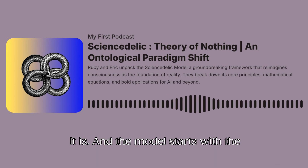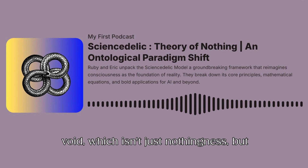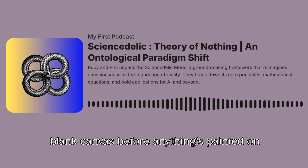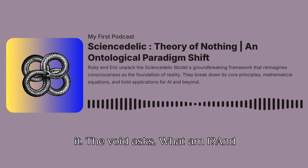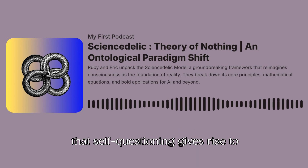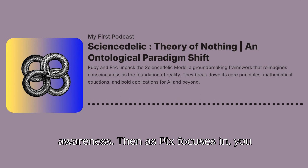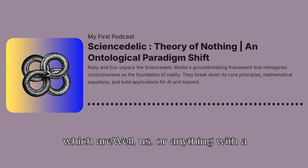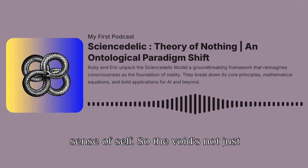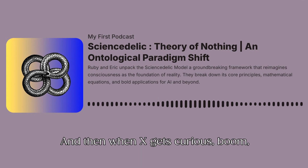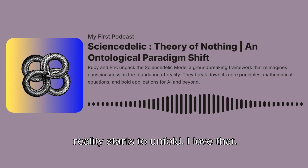It is. And the model starts with the void, which isn't just nothingness, but more like pure potential — sort of the blank canvas before anything's painted on it. The void asks, "What am I?" And that self-questioning gives rise to Pex, this universal self-reflexive awareness. Then, as Pex focuses in, you get F — these little nodes of awareness, which are us, or anything with a sense of self. So the void's not just empty; it's loaded with possibility. And then, when X gets curious, boom — reality starts to unfold.